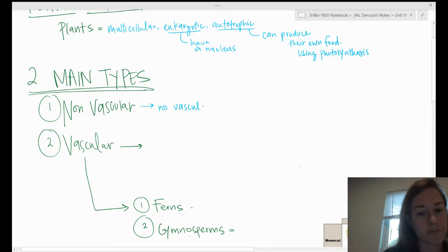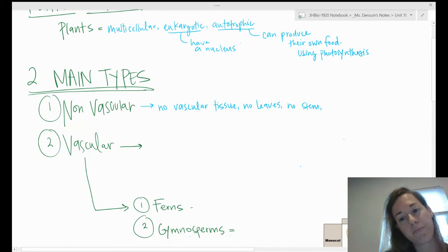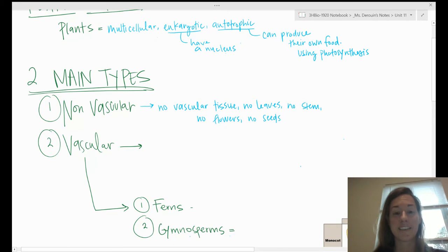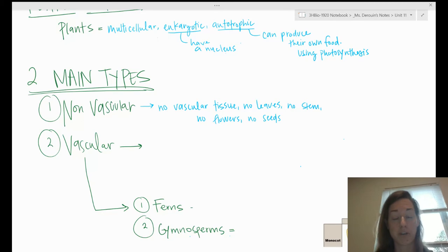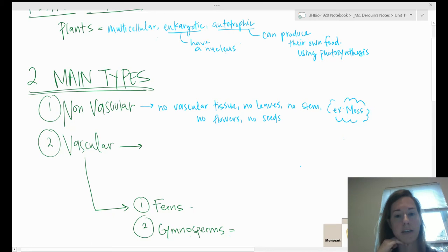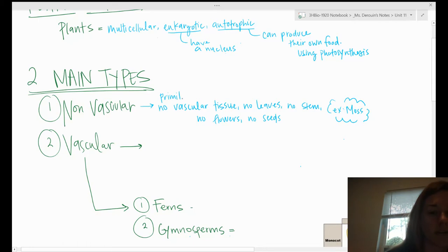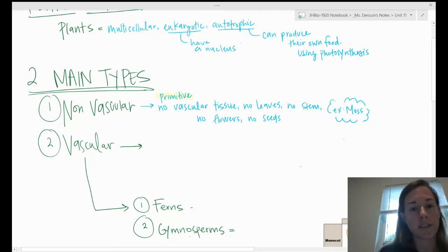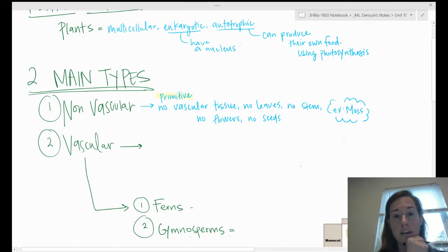Non-vascular plants have no vascular tissue, which we'll talk about in a second. They have no true leaves, they have no stem, they have no flowers and no seeds. So you're probably thinking, like, what do they have? They're basically just multicellular autotrophic organisms. The example of them is moss, and there are many types of mosses, but moss is a non-vascular plant. They're also going to be the most primitive of the land plants, which we remember hopefully that word from our evolution unit, which means simple, more similar to the ancient ancestor organism, doesn't have very many complex traits.